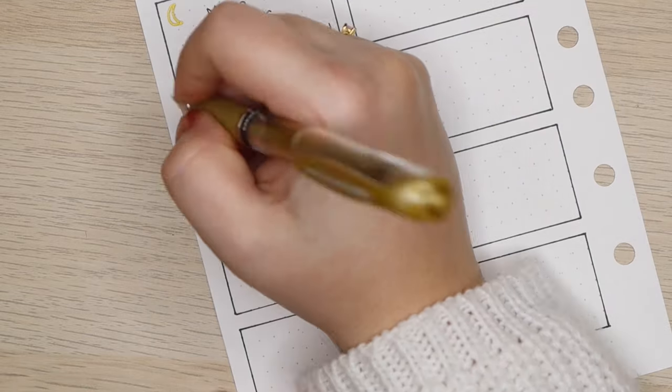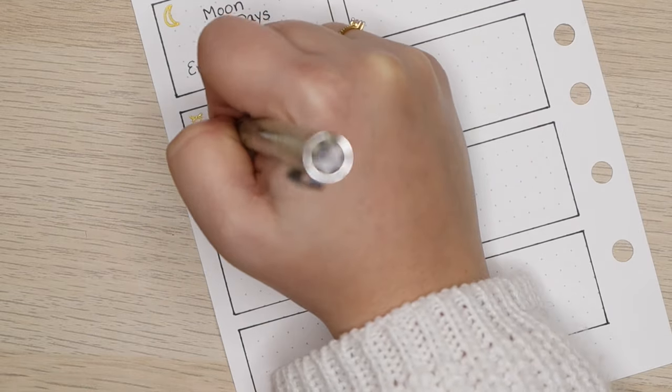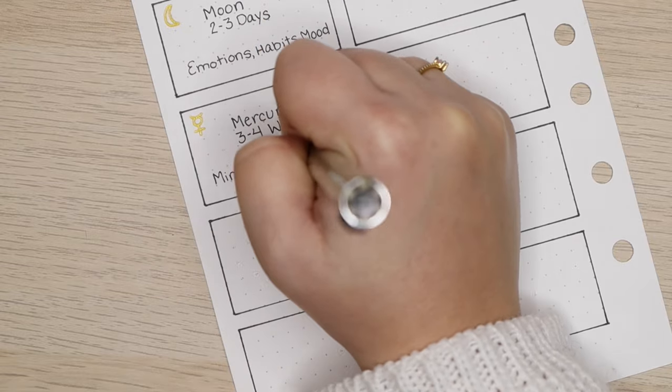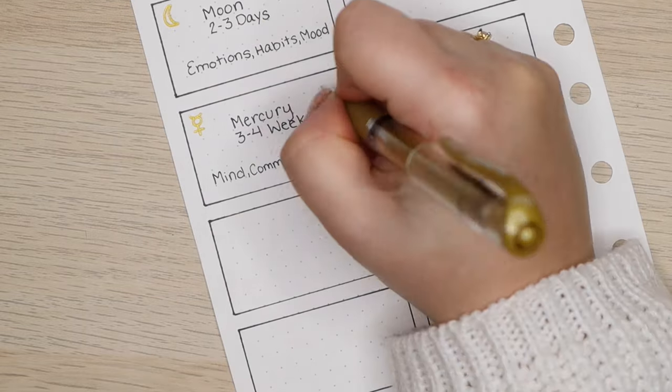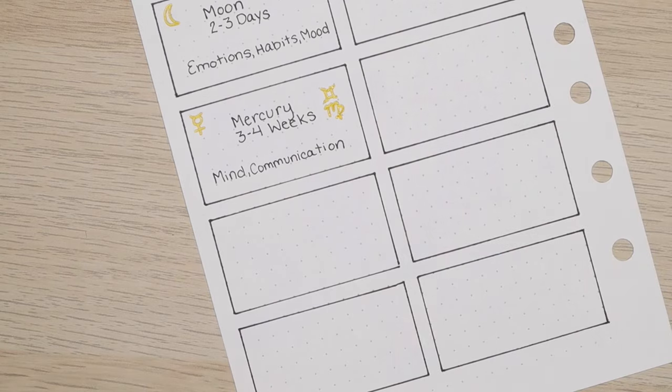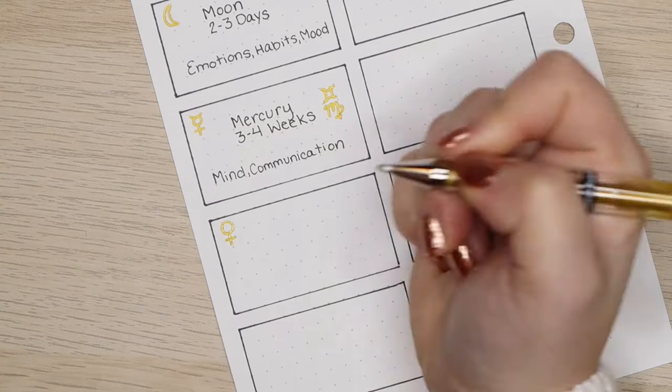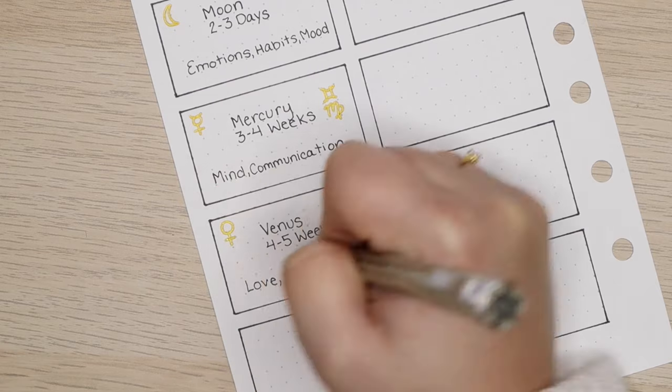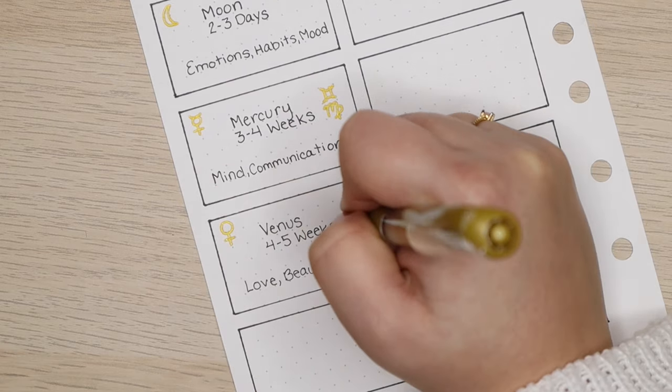So for example, the first one is the sun, which transits between signs about once a month, which is why each zodiac sign lasts roughly a month. It rules over Leo and it determines your ego, your basic personality, your consciousness, your vitality, and your stamina. Makes perfect sense.